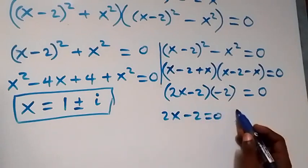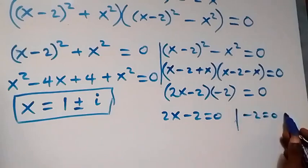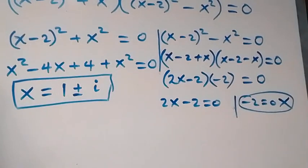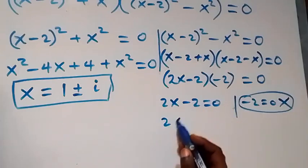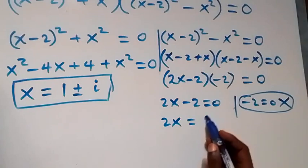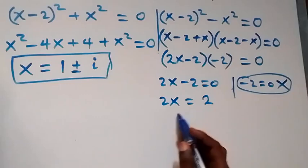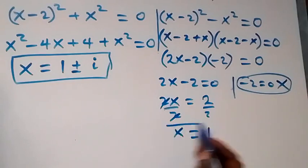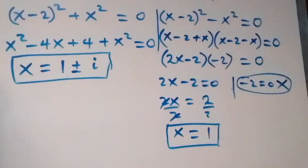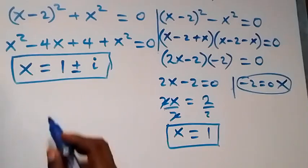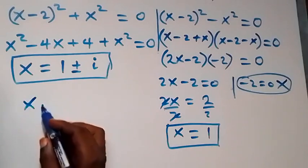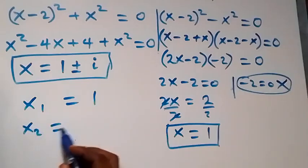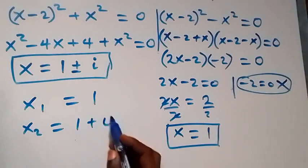This gives two cases: 2x minus 2 equals zero, or minus 2 equals zero. The second case has no solution. For the first: taking minus 2 to the other side, we have 2x equals 2, and dividing by 2 gives x equals 1. So x equals 1 is the real solution.